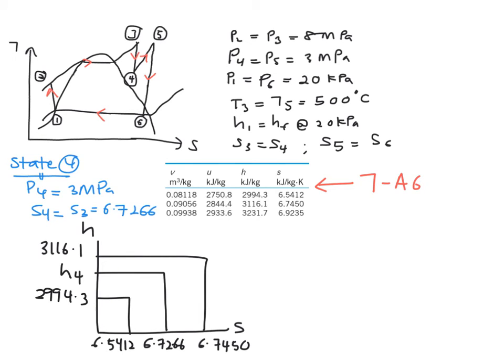So when you want to solve for your H4, make sure that you place your unknown value, the one that you are looking for, at the top and the very left-hand side of your equation. So this is how you are going to do the method of interpolation. H4 minus 2994.3, the lower part over here, and then you will take 3116.1, which is the highest value over here, to be minus with, again, the lower part, 2994.3.